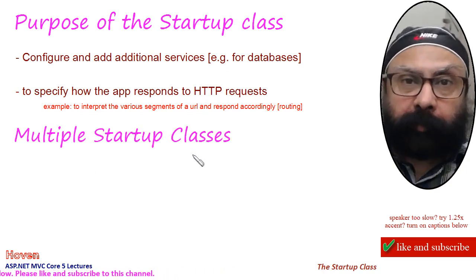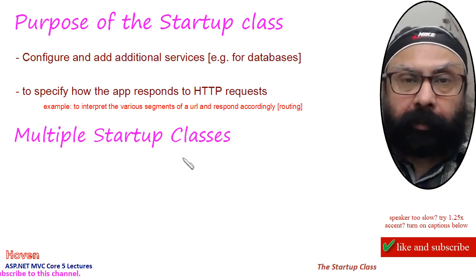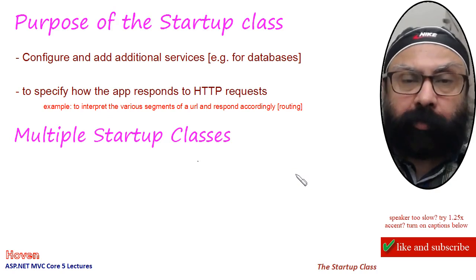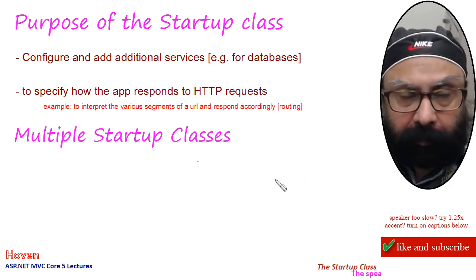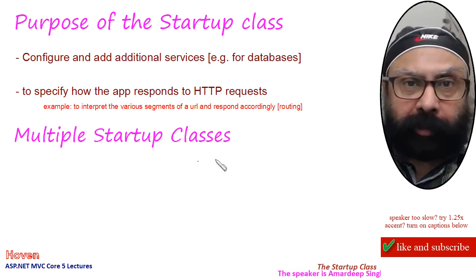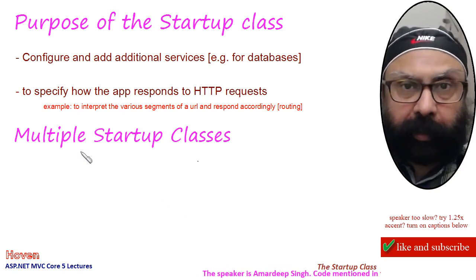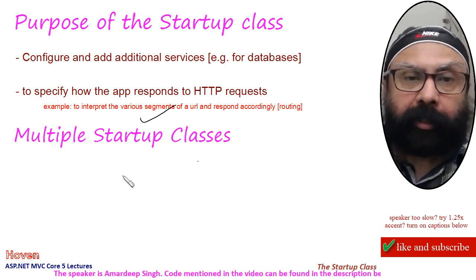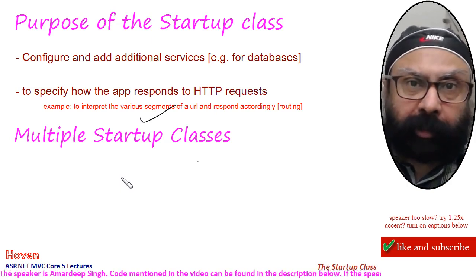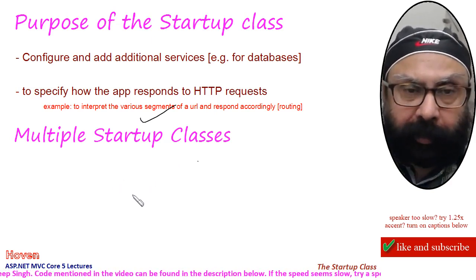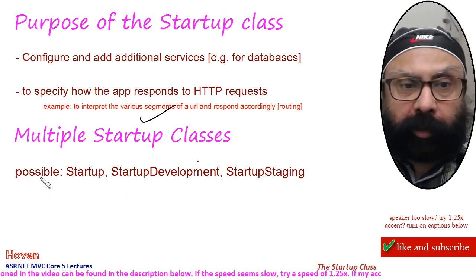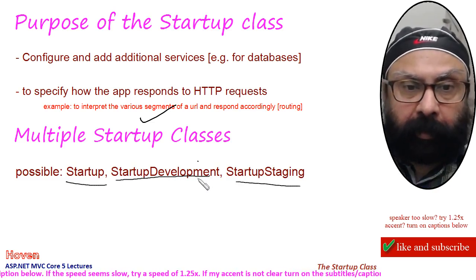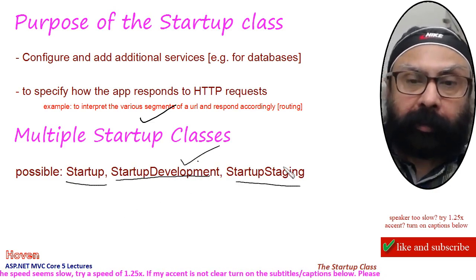Your project can contain multiple startup classes. The basic purpose is that if your application is running under development, staging, or production, you might want different startup configurations. So instead of using preprocessor directives, this framework gives you the option to name the startup classes such that they are automatically picked depending on the production, development, or staging environment. The possible names are Startup, StartupDevelopment, and StartupStaging — for the development and staging environments respectively.